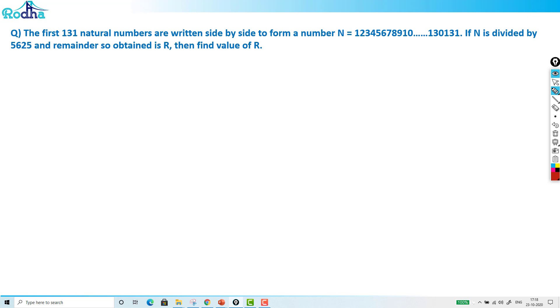The first 131 natural numbers are written side by side to form a number N equal to 1, 2, 3, 4, 5 till 131. If N is divided by 5625 and the remainder obtained is R, then find the value of R.